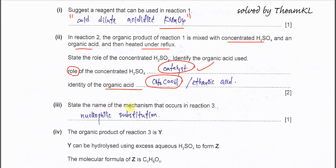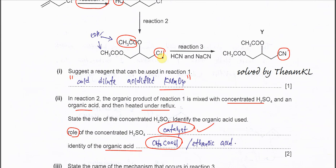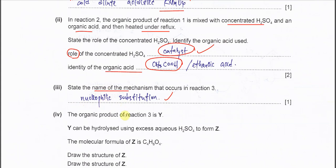Part C(iii). State the name of mechanism that occurs in reaction 3. The chlorine is substituted by the CN, so this is nucleophilic substitution. This is the name of the mechanism because the nucleophile substituted the chlorine.